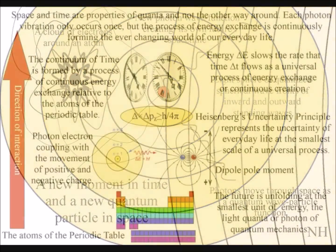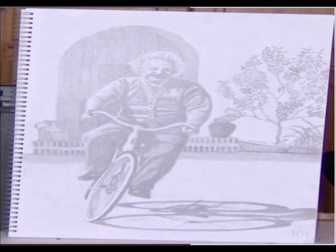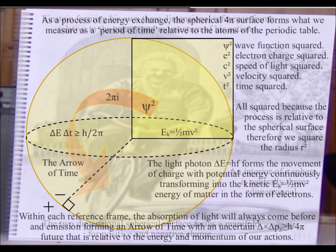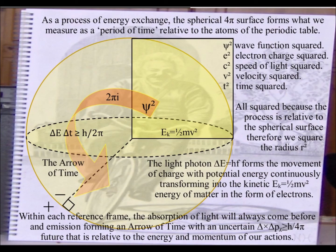In this theory, the universe is a continuum, with a probabilistic future unfolding with each photon-electron coupling, forming the emission of a new spherical wave of probability.